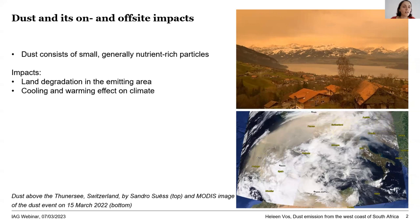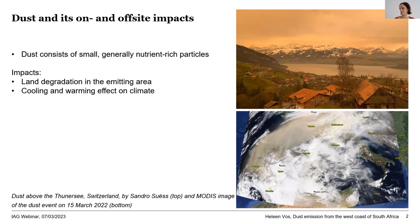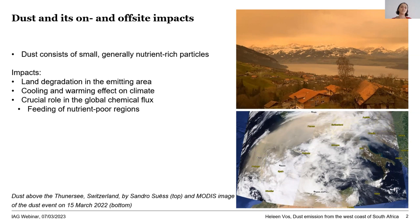Dust can have both cooling and warming effects on climate — generally cooling, as it reflects incoming light and can promote cloud formation. But when dust settles on snow or ice, it decreases the albedo. Dust plays a very important role in the global chemical flux, especially feeding nutrient-poor regions like the oceans, where dust deposition can feed algae and lead to more CO2 absorption. Dust can also have negative health effects — the WHO estimates 2 million deaths per year from air pollution, of which dust is a part, as it can carry pathogens and allergens.